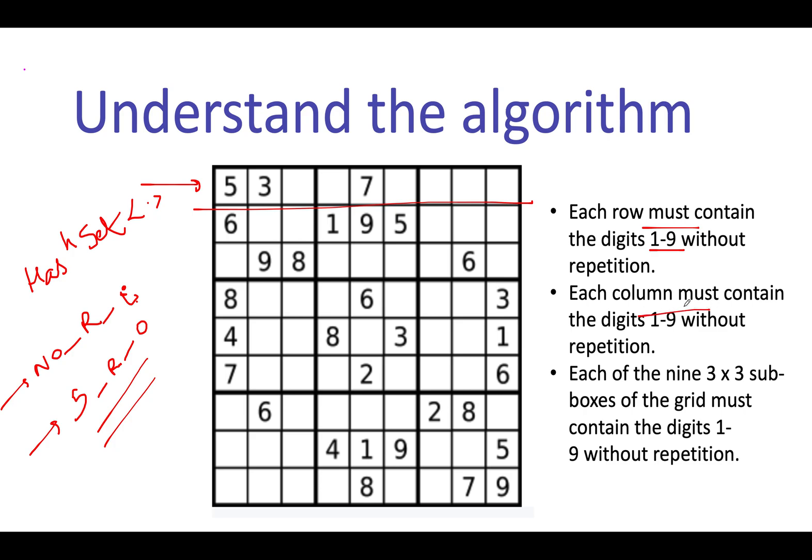Let's talk about how we will counter the columns. Each column must contain the digits 1 to 9 without repetition. For countering the columns, we will use the key as number_c that signifies the column, underscore the jth index of the column. You will add the elements in the format 5_c_0 because this is the starting column.